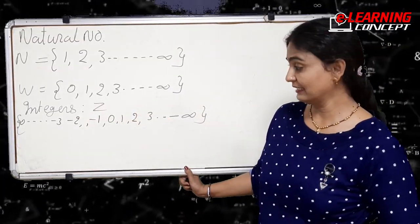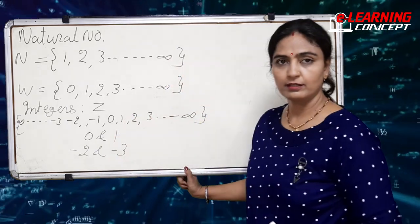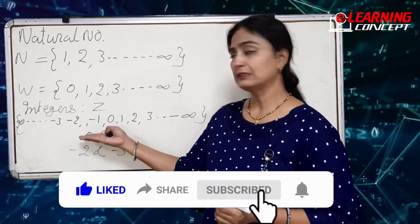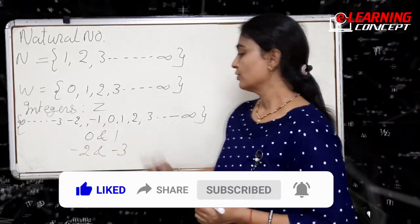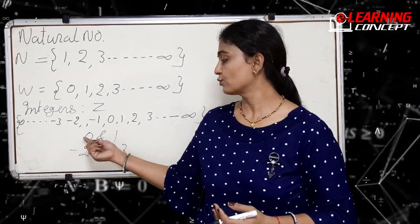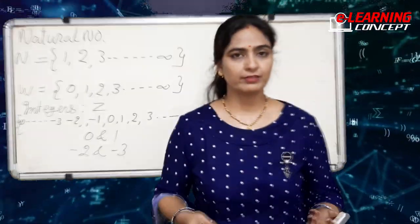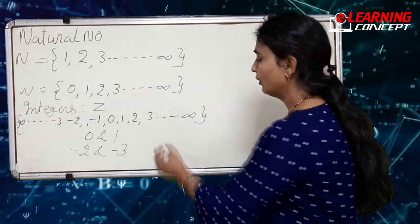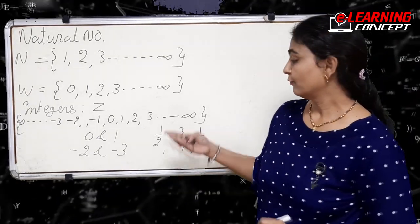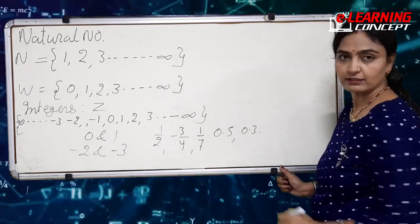If we take two consecutive integers like zero and one, or minus two and minus three, can we find any numbers which lie between these two consecutive integers? Yes, there are many — even infinite — numbers that lie between any two integers. They may be one by two, minus three by four, one by seven, and so on.